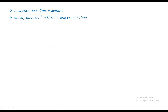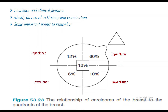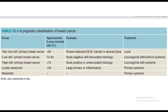Incidence and clinical features you have read in previous lectures. Some important points to remember: carcinoma of the breast is closely related to quadrant. In the upper outer quadrant it is 60%, upper inner quadrant is 12%, lower outer quadrant is 10%, lower inner is 6%, and central is 12%.